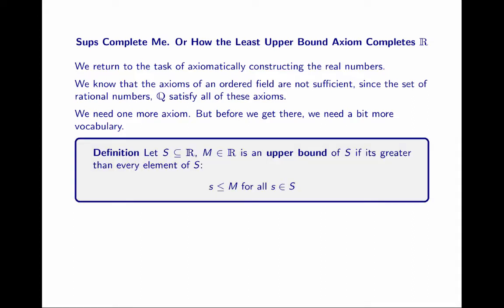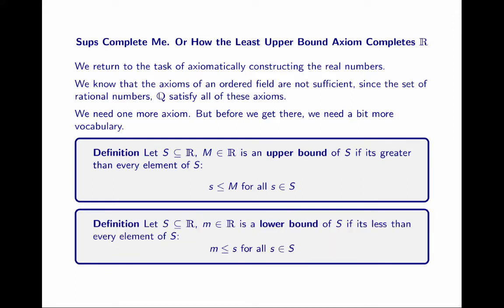So an upper bound — well, it's an upper bound. An upper bound M of a set S is a number that's greater than or equal to every element of the set. A lower bound, little m, is less than or equal to every element of a set.